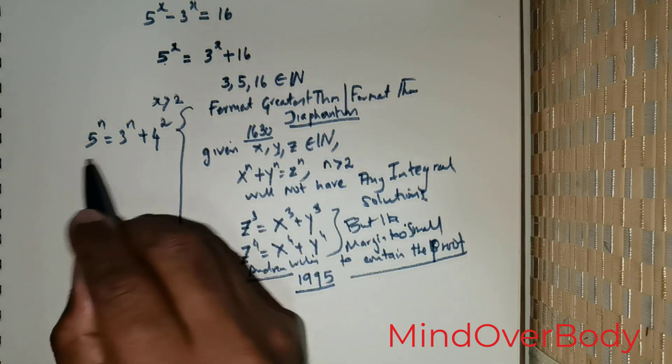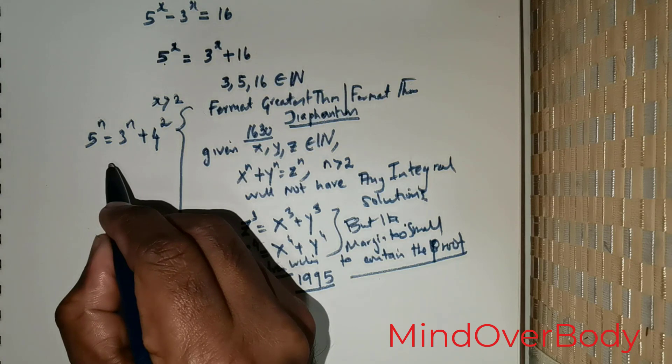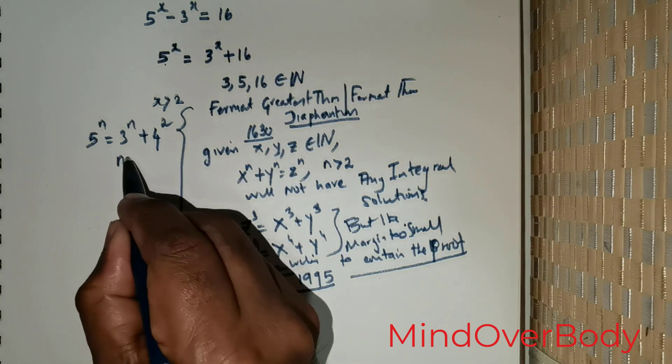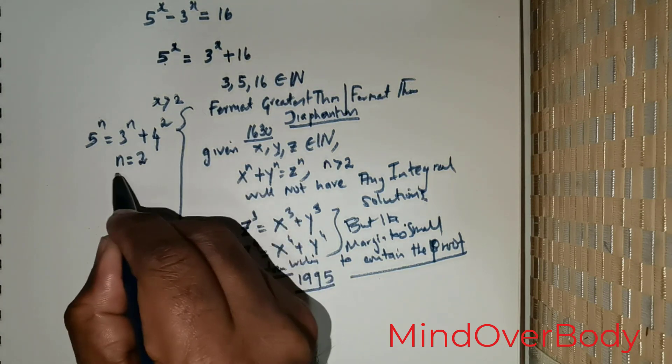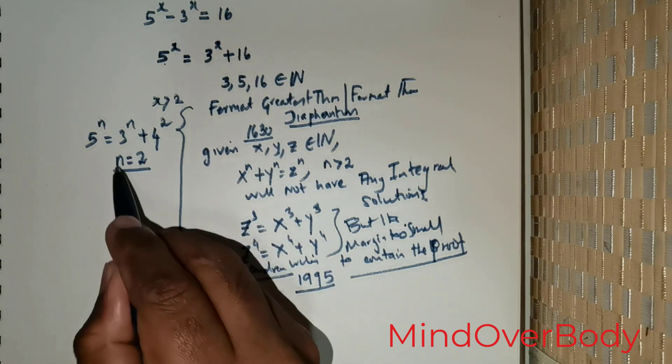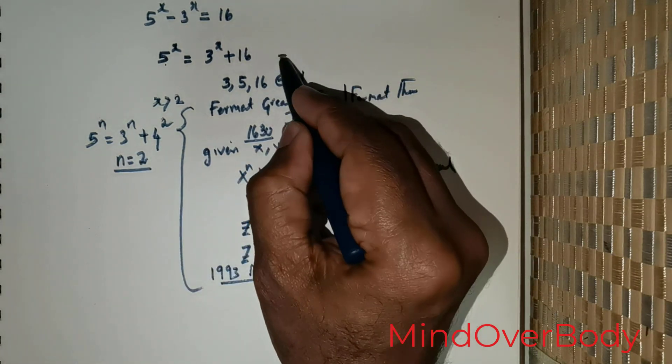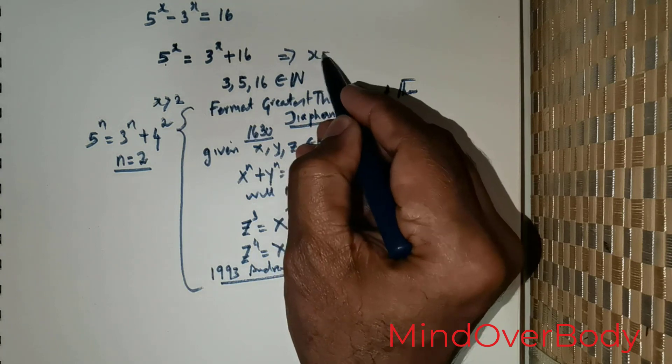So if I want to satisfy this particular equation, then the only possible value that would fit in would be n = 2. So this would be the only solution. In this case, x = 2 would be the only solution satisfying this equation.